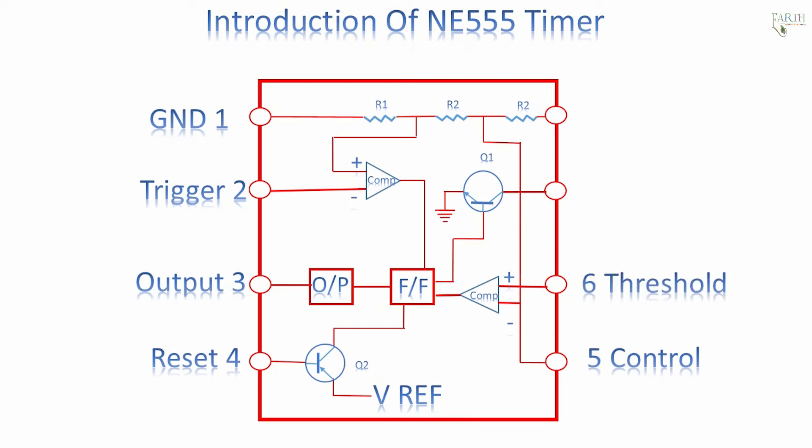Pin 6, threshold, detects two-thirds of rail voltage to make output LOW only if pin 2 is high. This pin has a very high impedance, about 10M, and will trigger with about 0.2 microamperes.